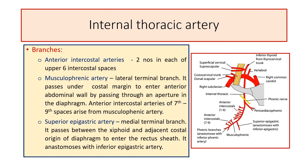The superior epigastric artery is the medial terminal branch. It passes between the xiphoid and the adjacent costal origin of the diaphragm and enters the anterior abdominal wall. In particular, it enters the rectus sheath, where it anastomoses with the inferior epigastric artery. In this picture you can see the terminal branches and the anterior intercostal arteries given off by the internal thoracic artery.